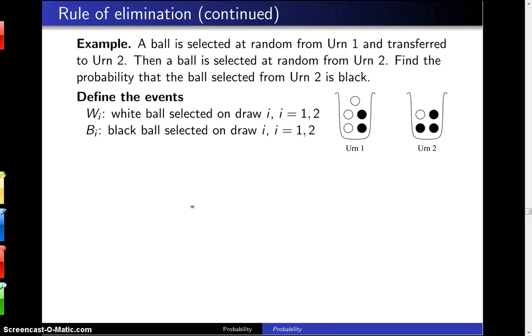A ball is selected at random from urn 1 and transferred to urn 2. Then a ball is selected at random from urn 2. Find the probability that the ball selected from urn 2 is black.